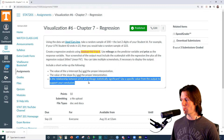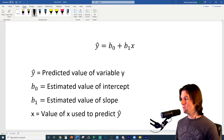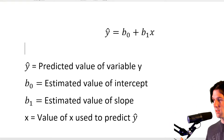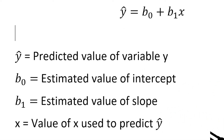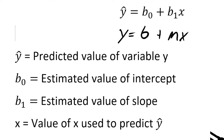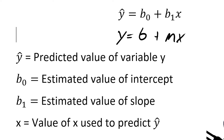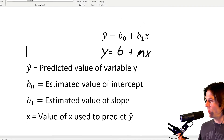Let's get started on a little practice. Let's start with understanding what our regression equation in statistics is. We have Y-hat, which is the predicted value of the Y variable, equals B0 — the estimated value of the intercept — plus B1, the estimated value of the slope, times the X value we are using to predict Y-hat. You might be familiar with Y = MX + B.